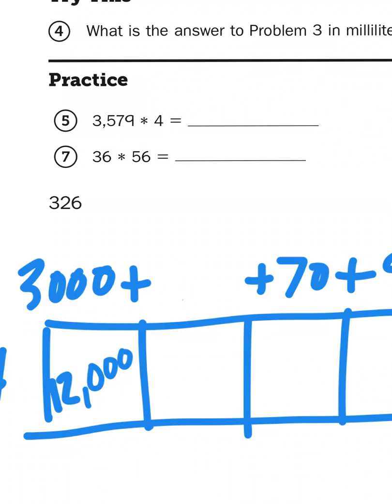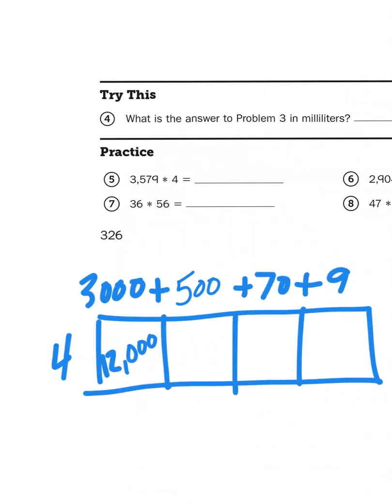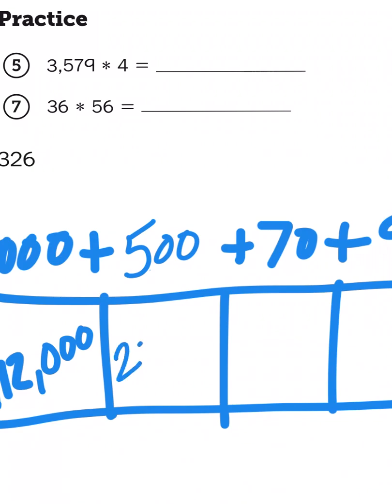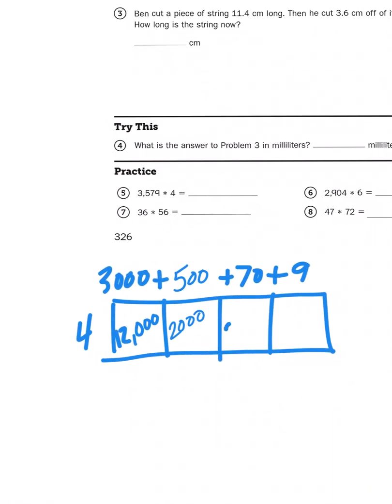There, that's clear. If I multiply 500 times 4, that's going to give me 20 hundredths, otherwise known as 2,000. 70 times 4 is 280. And, 9 times 4 is 36.